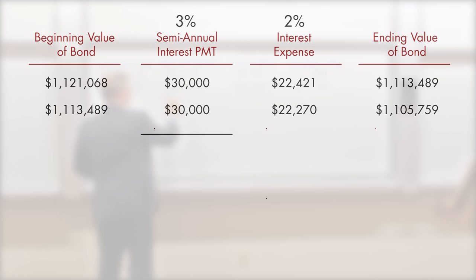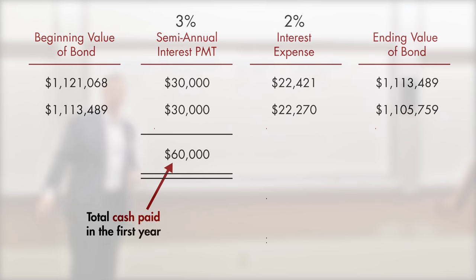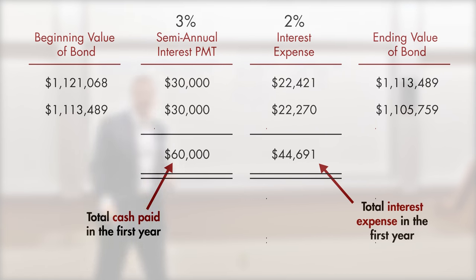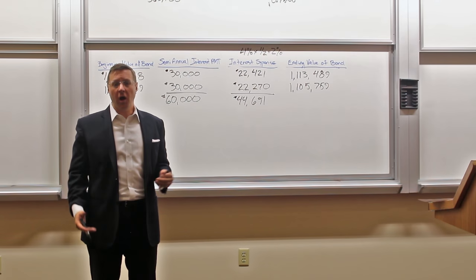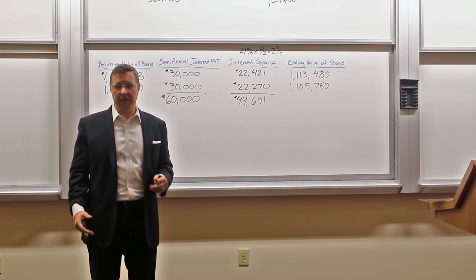So with the rounding that you can perhaps see that I've done there, you notice we are driving the value of that bond towards the million dollars that we're going to have to pay off at the end of the period. The cash that went out the door, $60,000 for the semi-annual interest, the cash out the door. The interest expense is the sum of these two interest expense periods, and we see that the interest expense is very different from the cash out the door, $44,691. So we've answered the three questions: What is the present value of the bond? How much cash has gone out the door in the first year? What is the interest expense that we'll find on our income statement in the first year? I hope you found this video helpful. Thanks for watching. Bye.